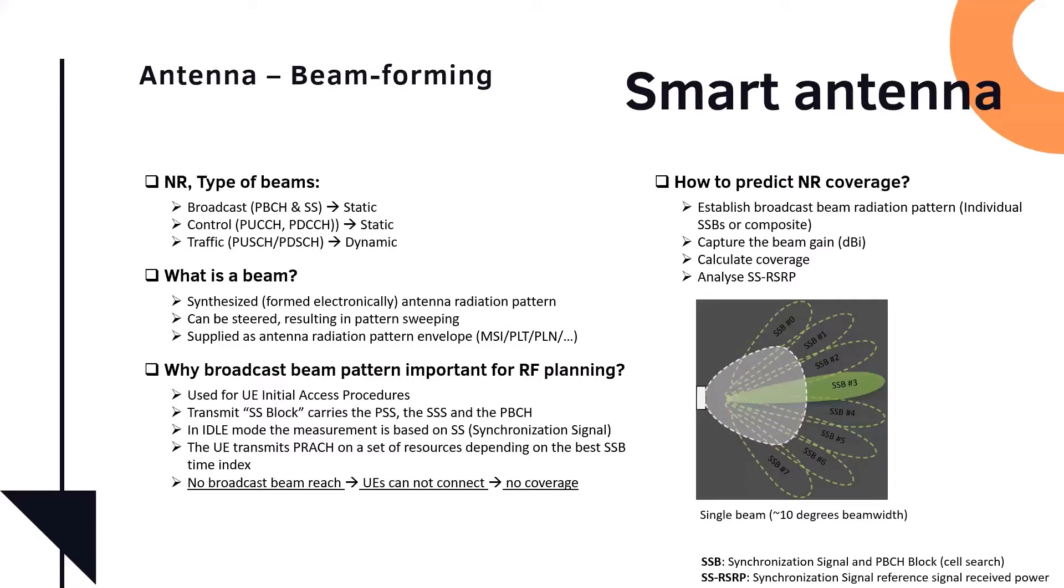So why broadcast beam is so important for our planning? Because broadcast beam is used for the user equipment initial access procedure. It's used to transmit the SS block, the SSB, which carries the PSS, which is primary synchronization signal, secondary synchronization signals, and the PBCH. All these channels or all this information are very, very important when you access the network, when you want to connect to the network, when you want to search the network, you want to benchmark different networks, when you want to do handover.